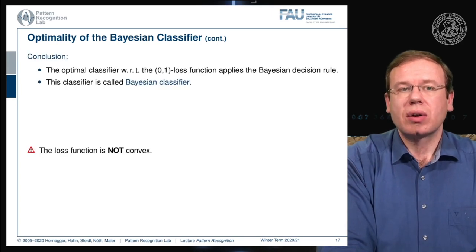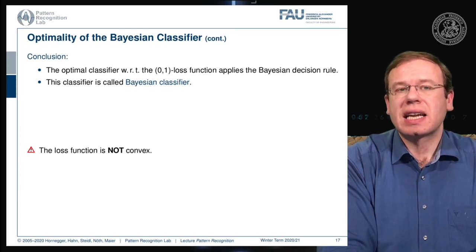Now we can conclude that the optimal classifier with respect to the 0-1 loss function is actually generated by the Bayesian decision rule and this classifier is called the Bayesian classifier.